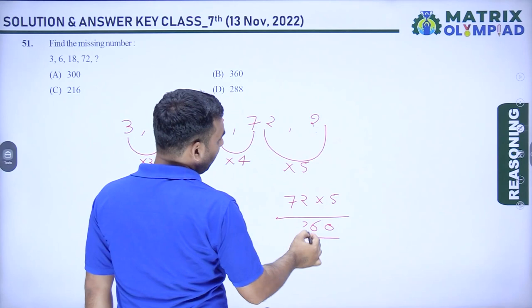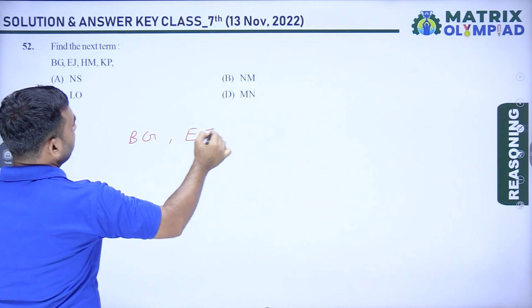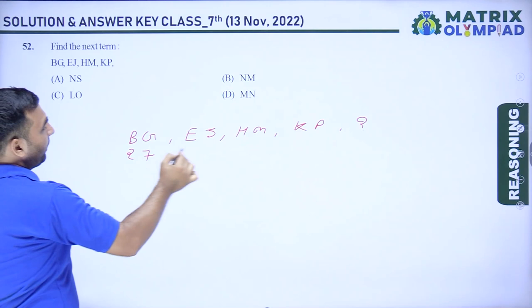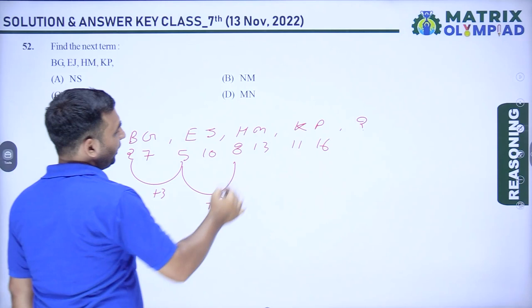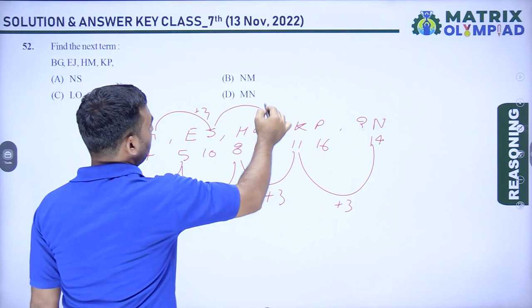Question 2: find the next term in the series B, G, E, J, H, M, K, P. Rankings: 2, 7, 5, 10, 8, 13, 11, 16. First sub-series: 2, 5, 8, 11 — adding 3 each time, next is 14 = N. Second sub-series: 7, 10, 13, 16 — adding 3 each time, next is 19 = S. Answer is N, S. Option A is correct.